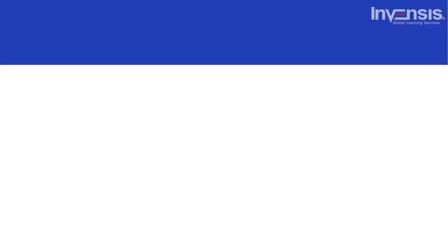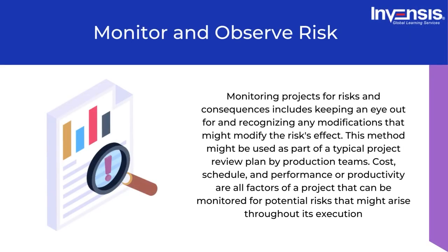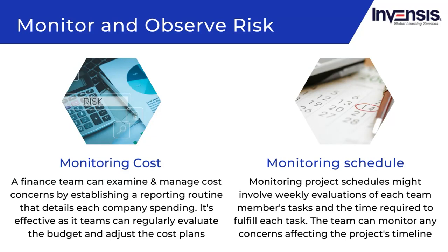The fifth risk mitigation strategy is monitor and observe. Monitoring projects for risks includes keeping an eye out for any modifications that might change the risk's effect. This method can be used as part of a typical project review plan. Cost, schedule, and performance or productivity are all factors that can be monitored for potential risks throughout project execution.